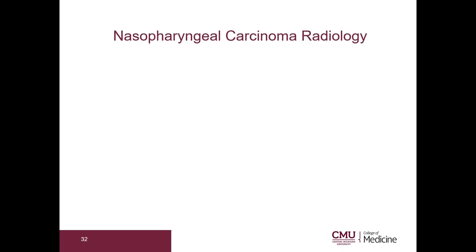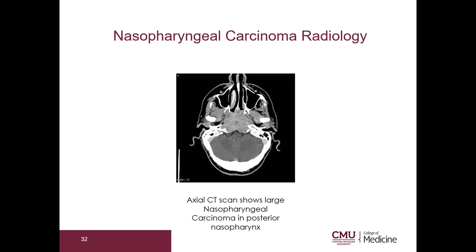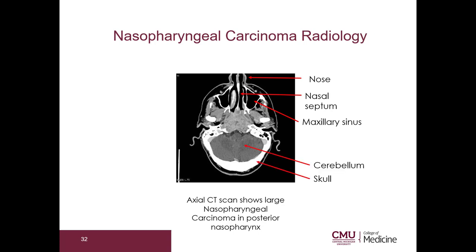Let's take a look at the radiology. Here is our axial CT scan. You can see the nose, the nasal septum, the maxillary sinus, the cerebellum, and the skull. Right here is the large mass which represents the nasopharyngeal carcinoma — I've put a blue outline around the tumor.